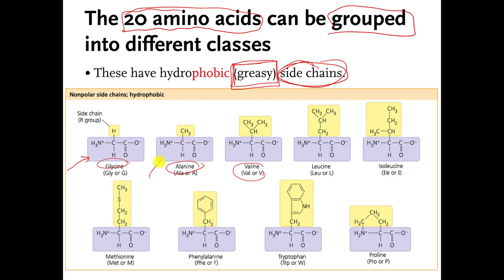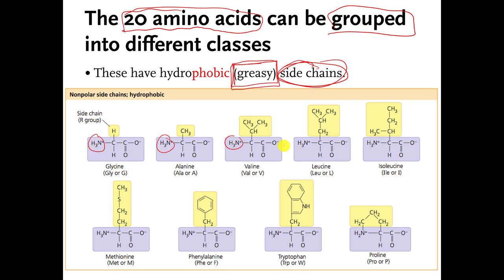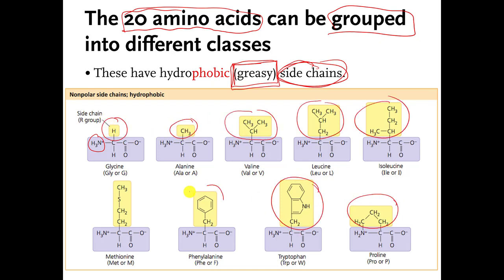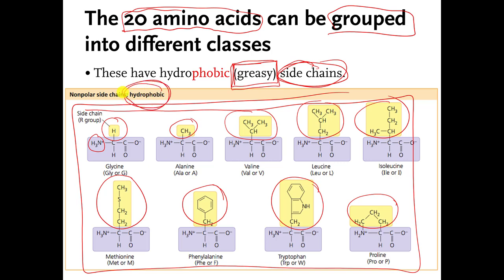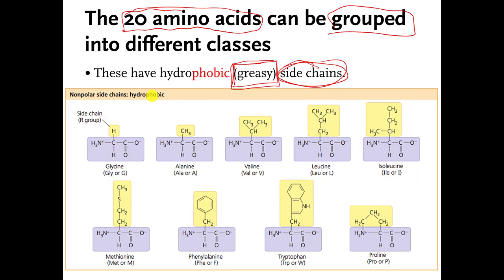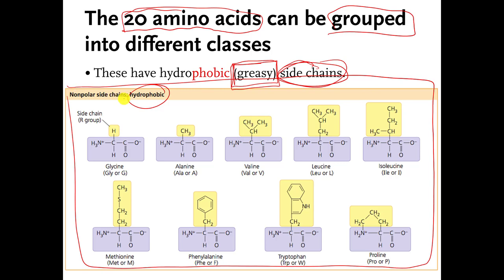The parts highlighted in purple are what all of the amino acid molecules have in common with each other — you can see that part in all of them. The part highlighted in yellow is the side chain, and these are all different from each other. The side chains of these amino acids are considered hydrophobic — they don't like to mix with water very much. I don't expect you to memorize which amino acids have hydrophobic side chains, but you should be able to consult your book during a quiz or test to figure out which ones are hydrophobic and which are hydrophilic, because this table is in chapter 16.